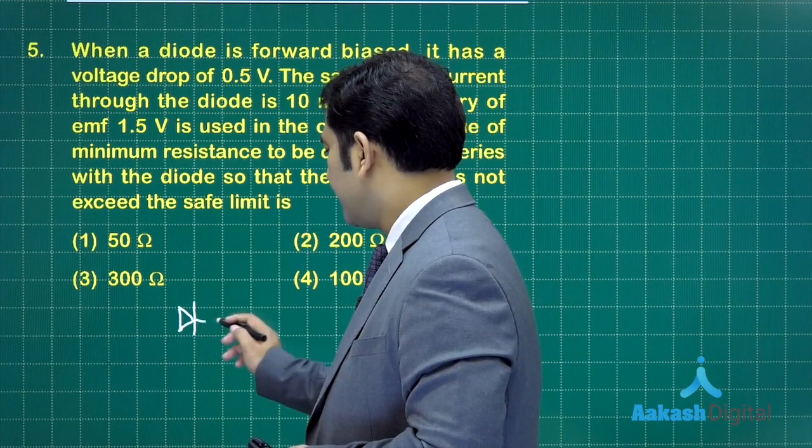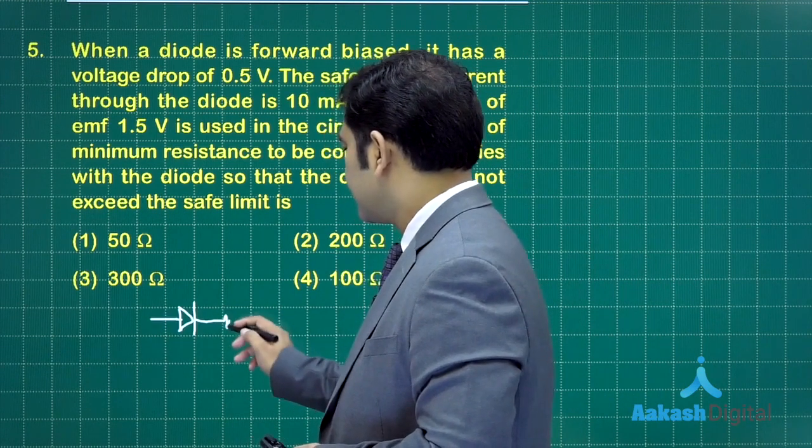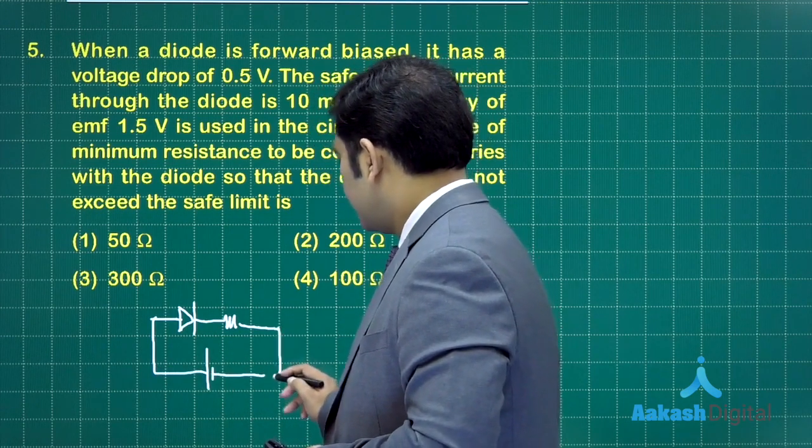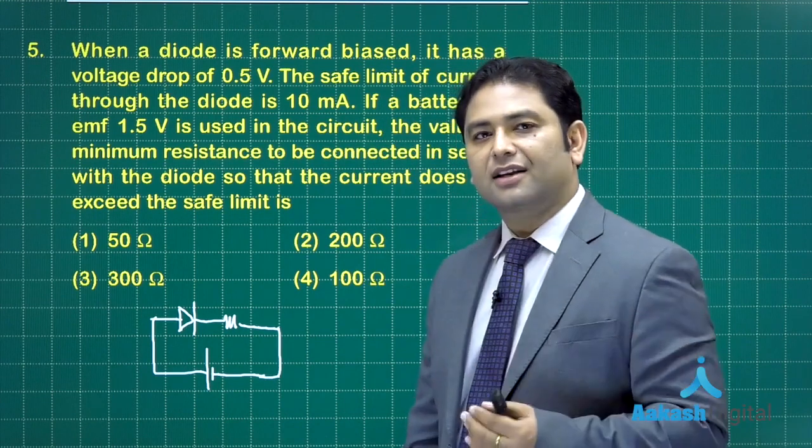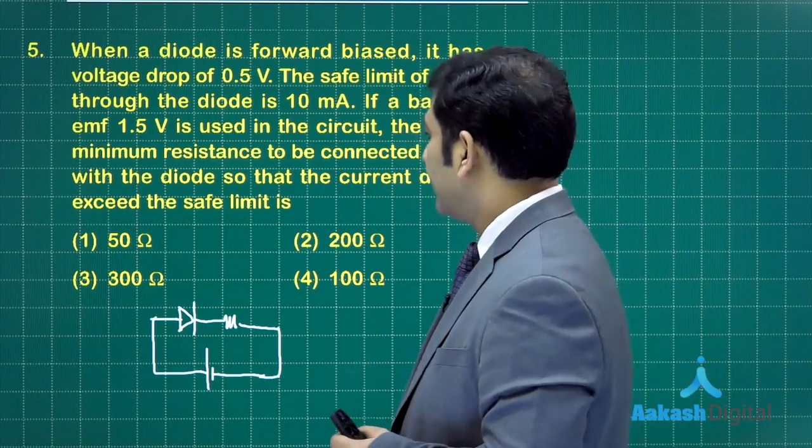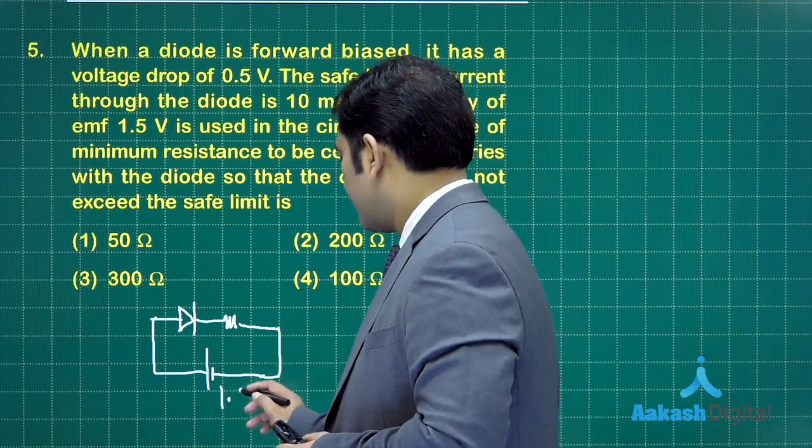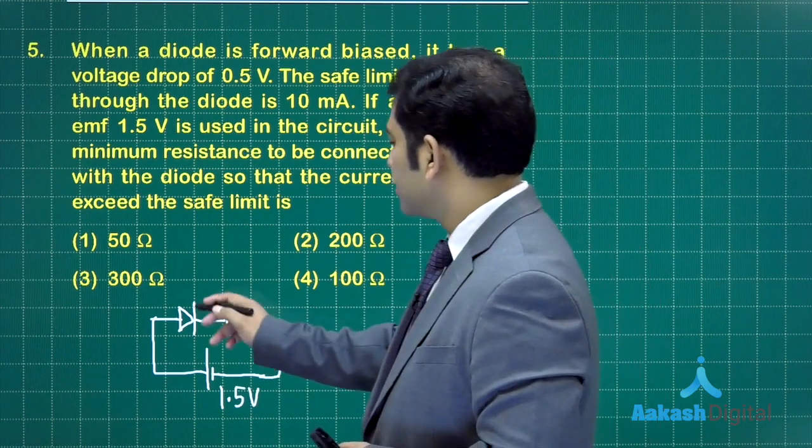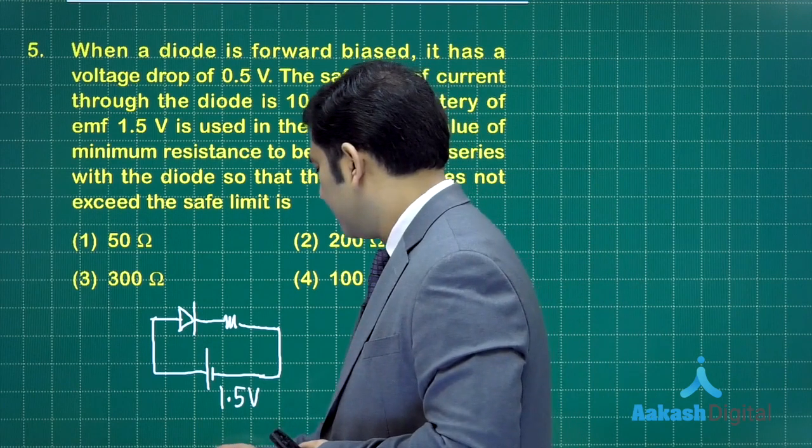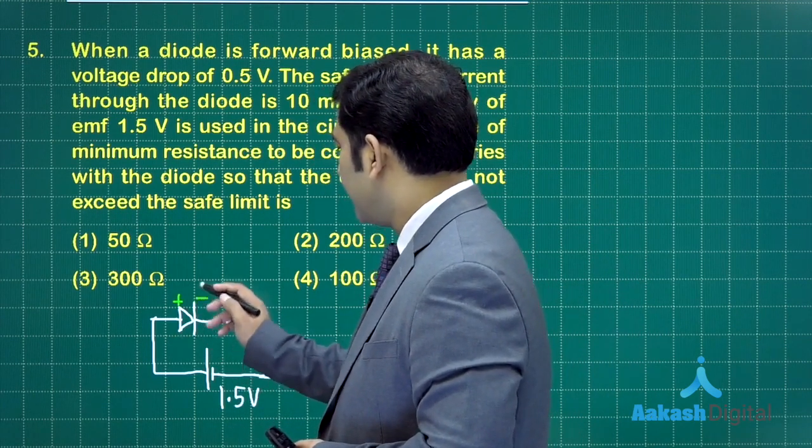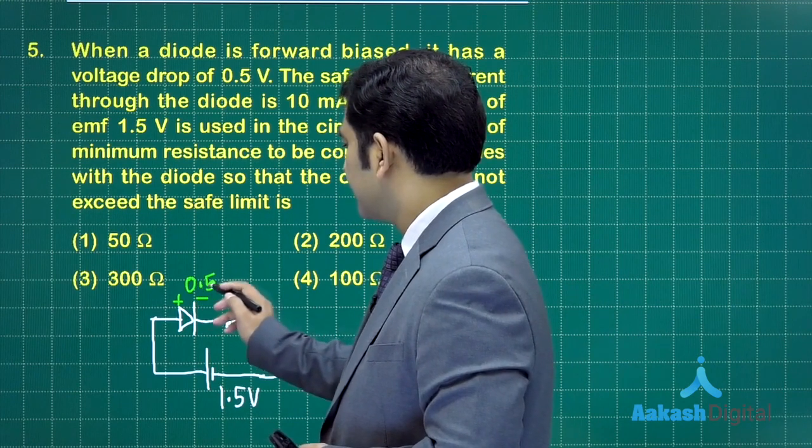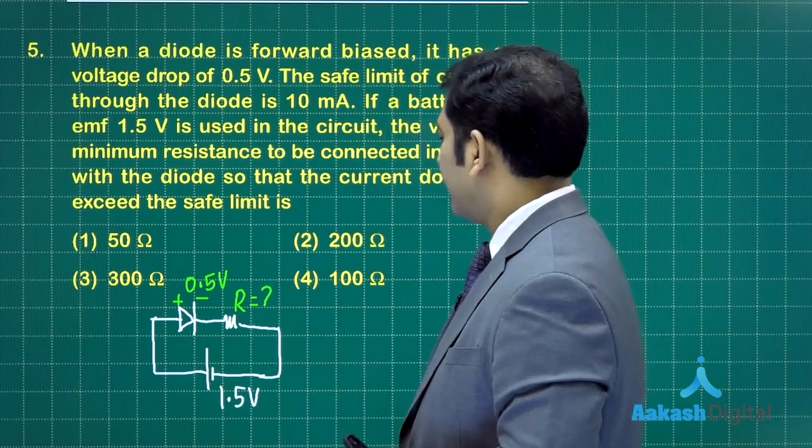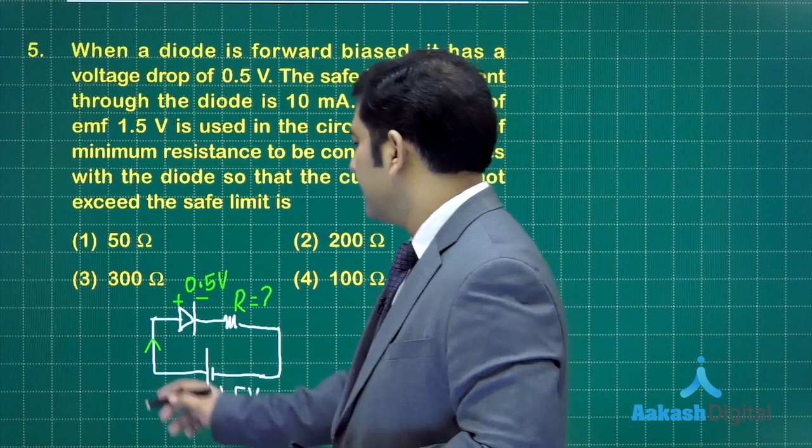Let's begin with the question. The diode is forward biased, and this is the resistance that has to be connected in series. The job of the resistor is to limit the current within the permissible value. This is given as 1.5 volt, and the value of potential difference is given as 0.5 volt. That's how the forward bias drop is represented.